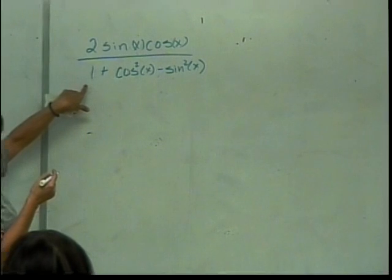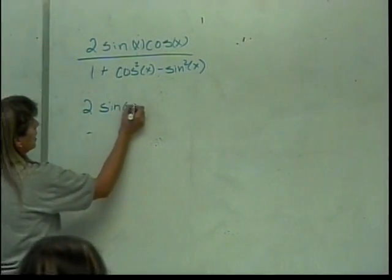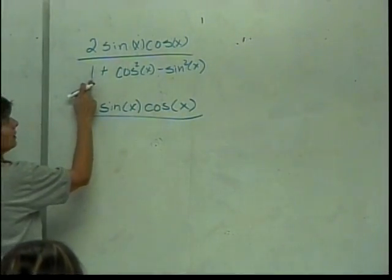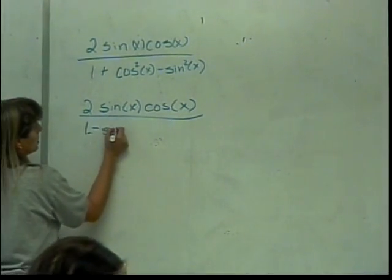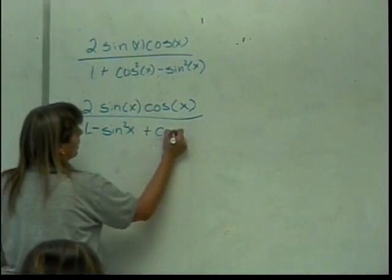So if I do a little rearrangement, here I have 2 sin(x) cos(x). If I take this and put it with that, I'll have 1 minus sin²(x). I can just rearrange those, right? Plus cos²(x).